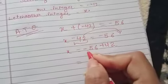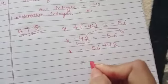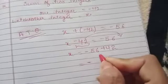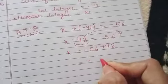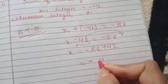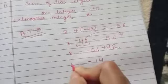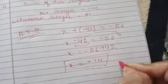Now subtract it. -56 is a bigger number, so answer will be negative. So 6 minus 2 is 4, 5 minus 4 will be 1. So x equals -14 is your required answer.